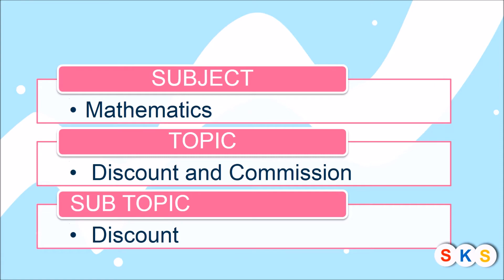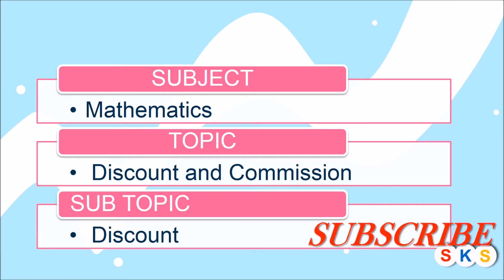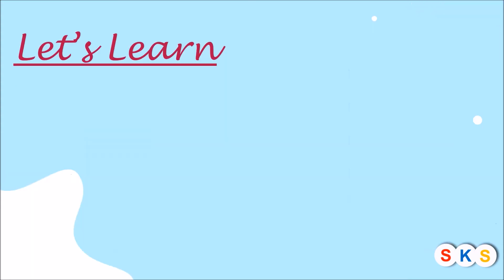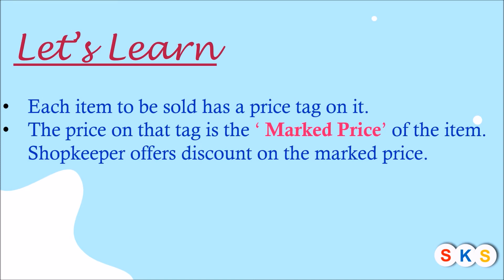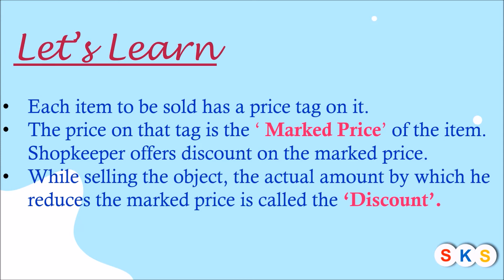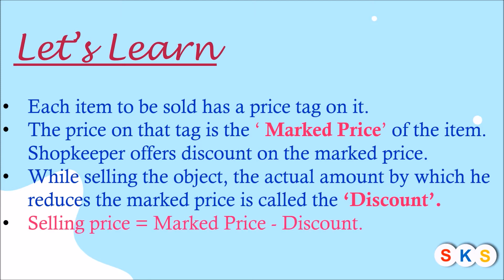In this video we are going to learn chapter number nine: discount and commission. Each item to be sold has a price tag on it — the price on that tag is the mark price of the item. A shopkeeper offers discounts on the mark price while selling the object. The actual amount by which he reduces the mark price is called the discount. So: selling price equals mark price minus discount.